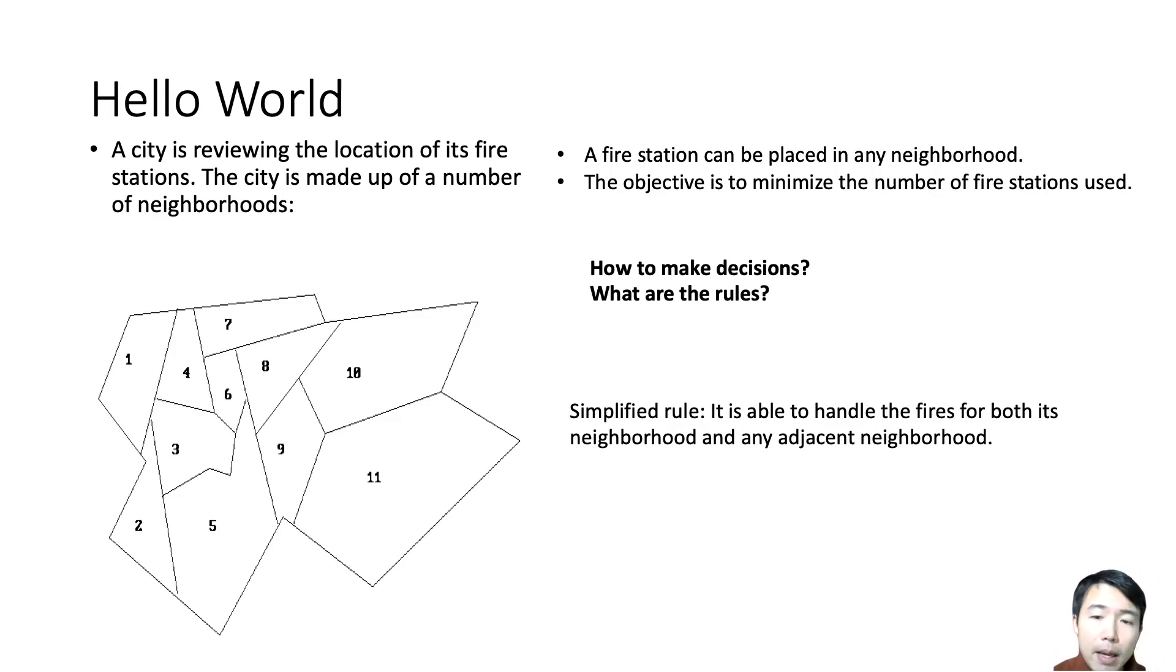How to make decisions? What are the rules? You can think about maybe the population density of each neighborhood. You would assume you want to place a fire station at a neighborhood with the highest population density, and you probably don't want to put a fire station into an area with very few people living there. You should also probably consider traffic on the road, conditions, or any construction information in any of the neighborhood. Those are fine in real world.